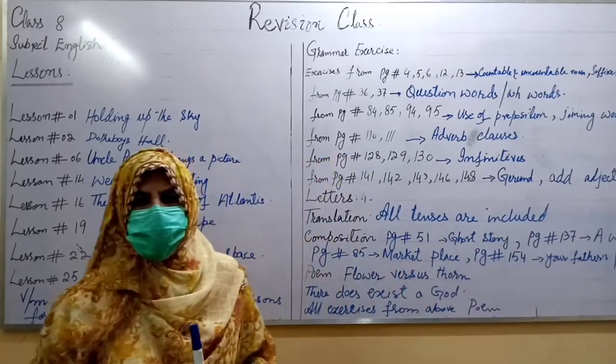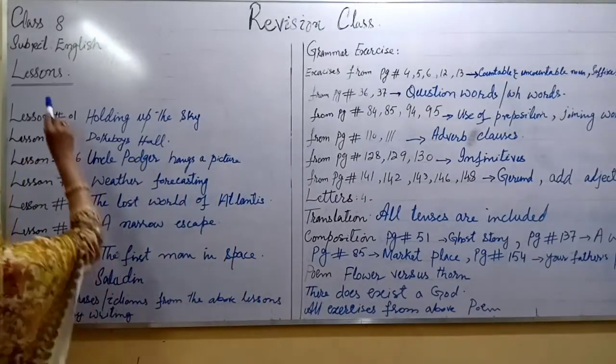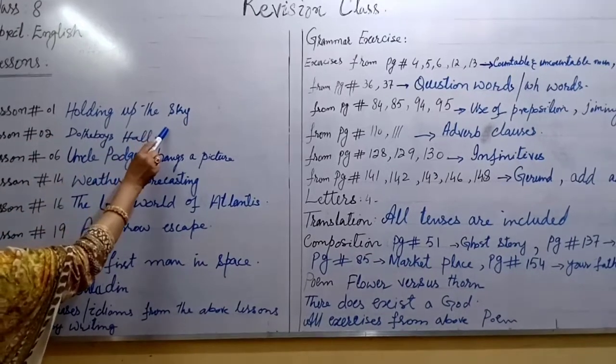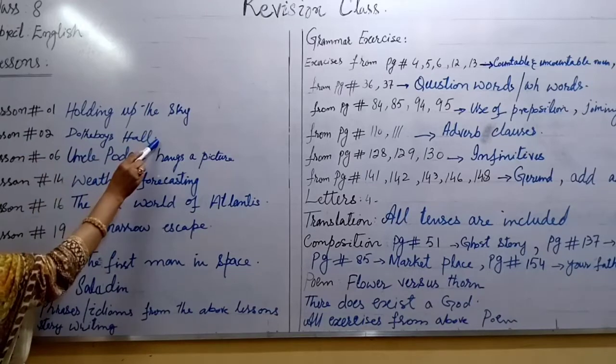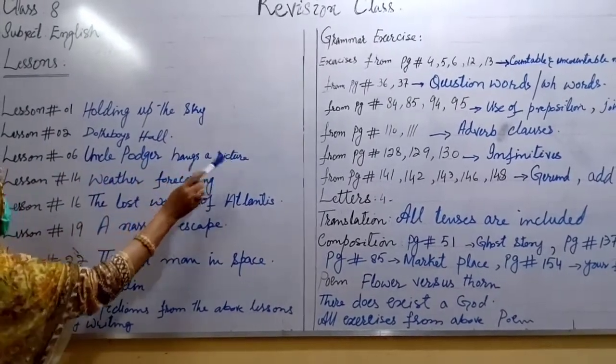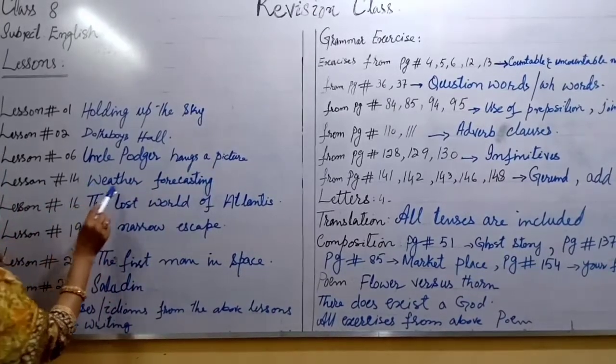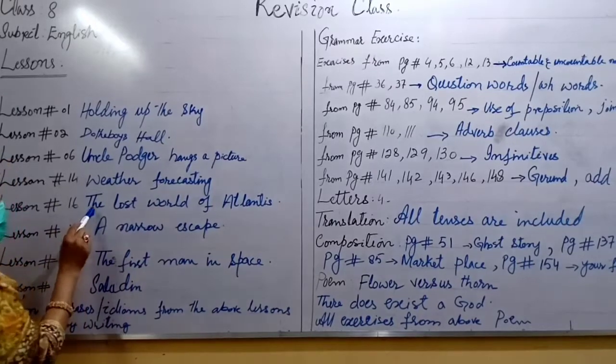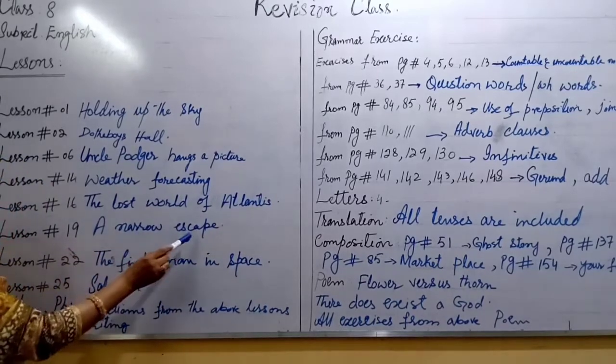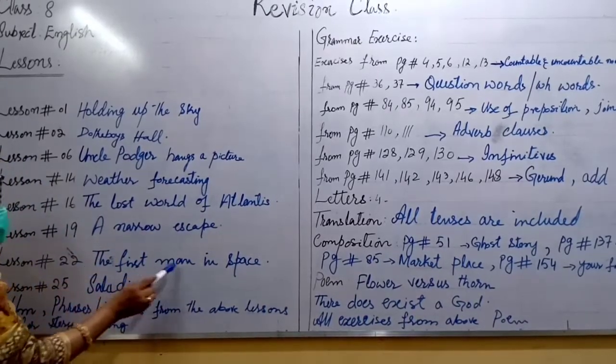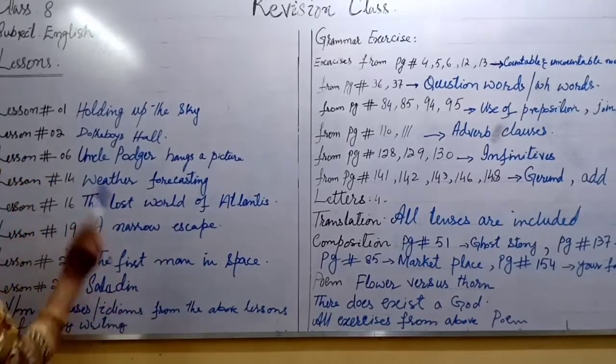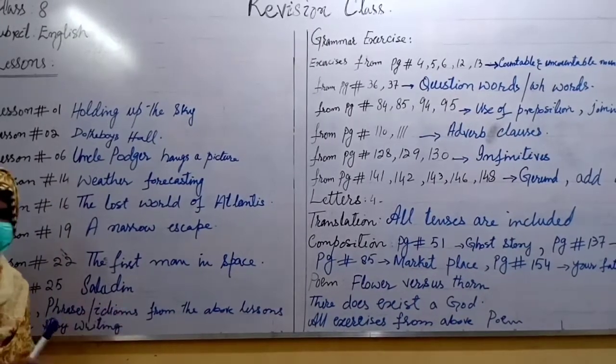Students, look at the board. You have learned lesson number 1 Holding up the sky, lesson number 2 Do the boys hold, lesson number 6 Uncle put your hands a picture, lesson number 4 Weather forecasting, lesson number 16 The lost world of Atlantis, lesson number 19 A nervous cave, lesson number 22 The forced man in space, lesson number 25 Saladin. I taught you these lessons in your English class.